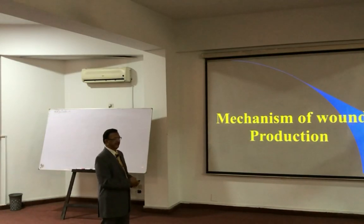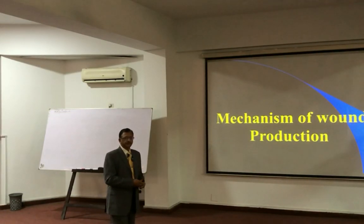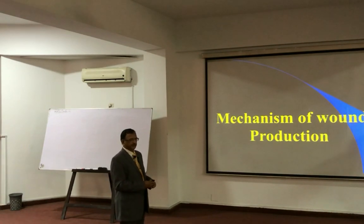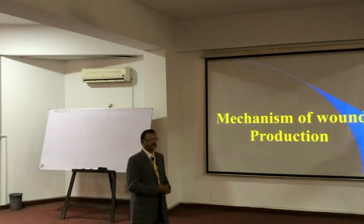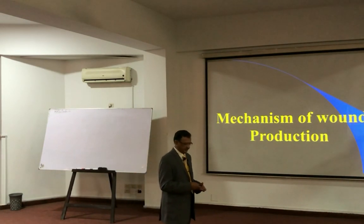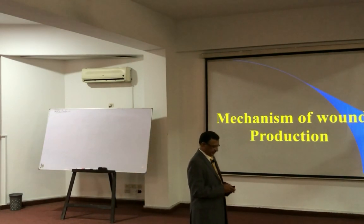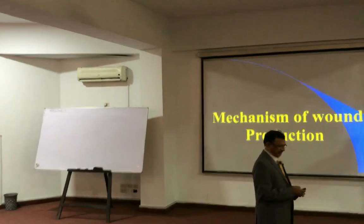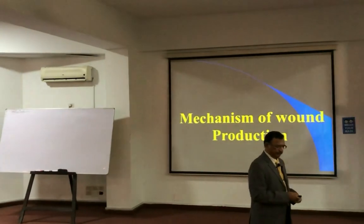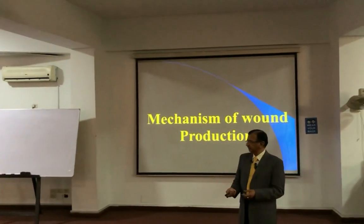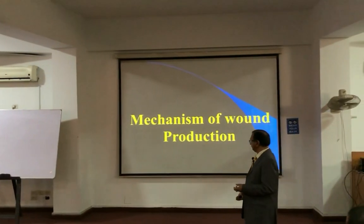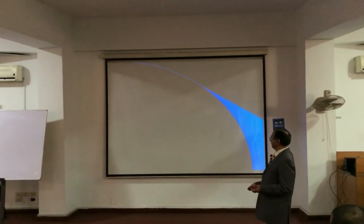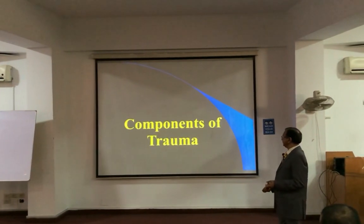The mechanism of wound production — how wounds are produced — and the mechanics involved are important to differentiate the various types of injuries.